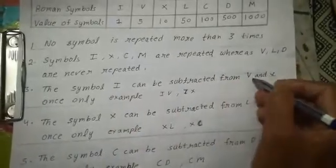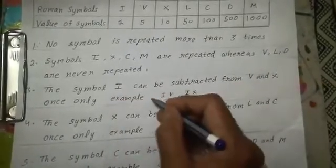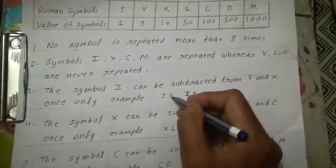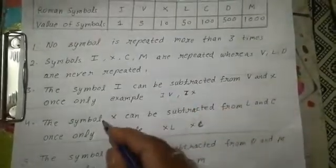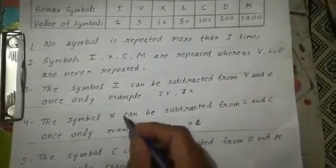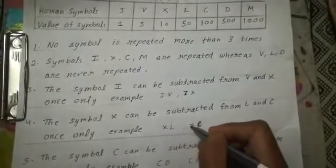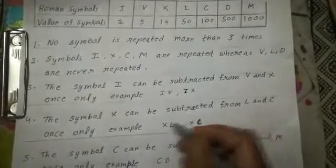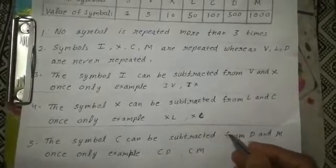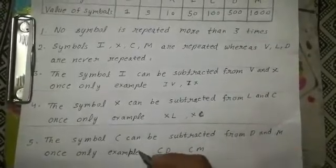The symbol I can be subtracted from V and X once only — examples: IV, IX. The symbol X can be subtracted from L and C once only — examples: XL, XC. The symbol C can be subtracted from D and M once only — examples: CD, CM.